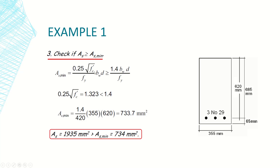Comparing the two expressions (with the b × d and f_y terms cancelled), 0.25√28 is less than 1.4, so the second expression governs. As_minimum = (1.4 / 420) × 355 × 620 = 733.7 mm², which is much smaller than the required A_s of 1827 mm². We are on the safe side.